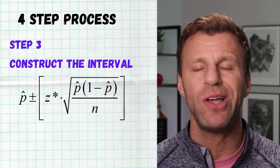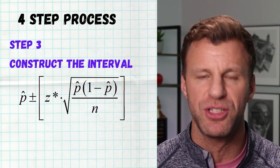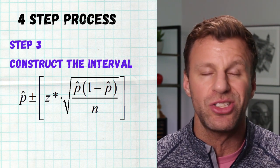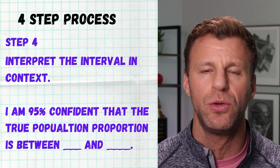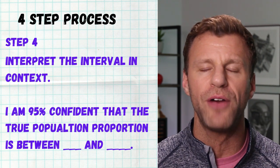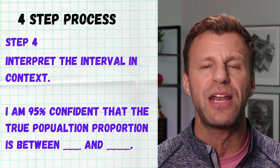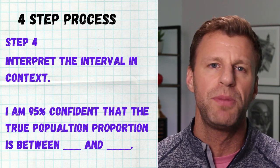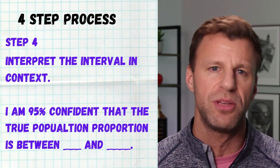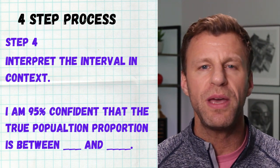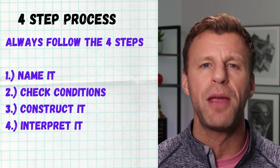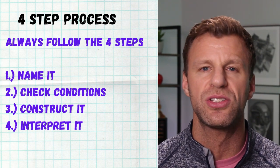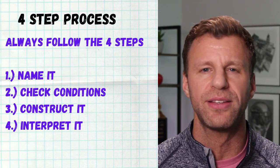Building this interval is quite easy — just plug in the right numbers in the right spots. The fourth step is interpreting what the interval tells you. We start with our level of confidence and say something like: I'm 95% confident that the true population proportion of teenagers that are lactose intolerant is between X and Y, which is the bottom and the top of your interval. Make sure you follow those four steps.